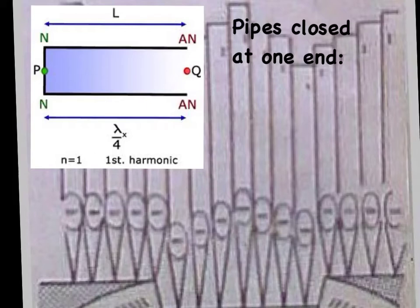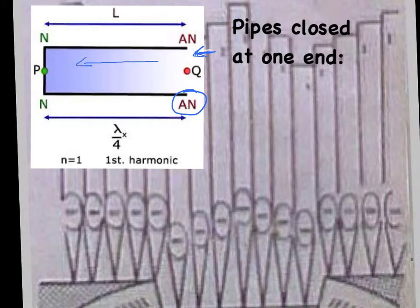When you blow in on this side, you're creating a compression. A compression is similar to an antinode, because a compression is where you have your maximum pressure. The wave travels down as a compression, and then when waves bounce off of a fixed end, it reflects inverted.